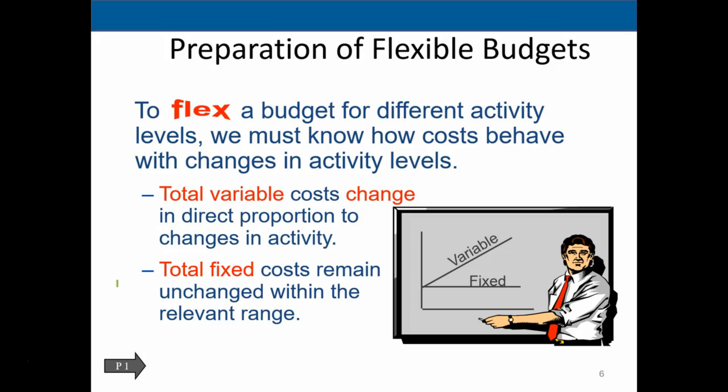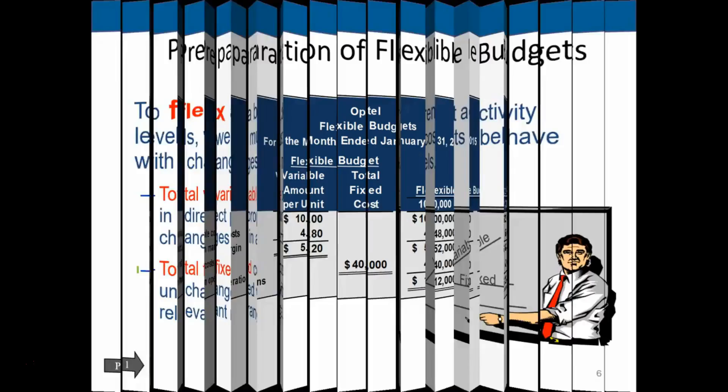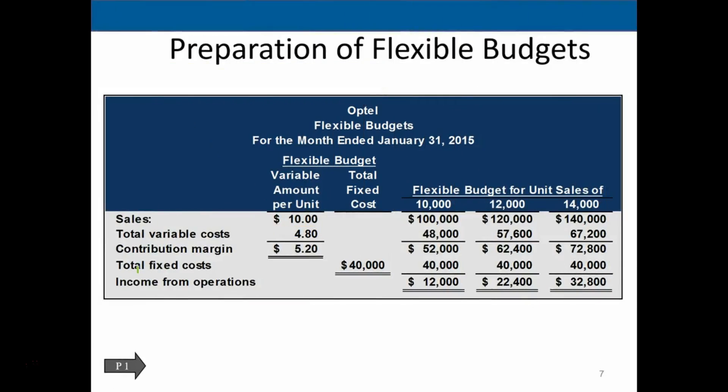Variable costs go up as the production level goes up. If we're talking about things like direct materials and we sell more product, those direct materials are going to increase at a constant rate. Fixed costs, on the other hand, stay constant no matter how many we sell. Note what happens when we sell more or less: these two things behave differently. Variable costs go up at a constant level, while the fixed cost per unit actually goes down as we produce more — so we want to break those out.